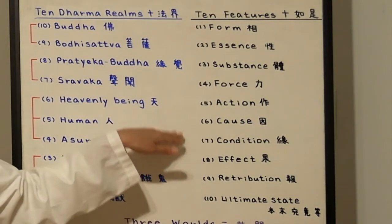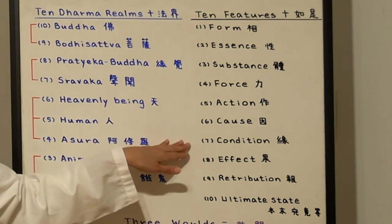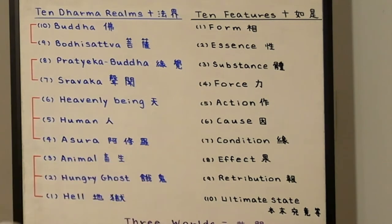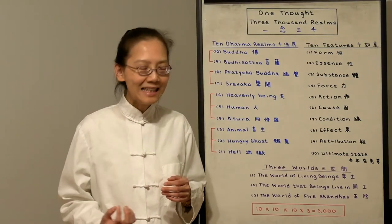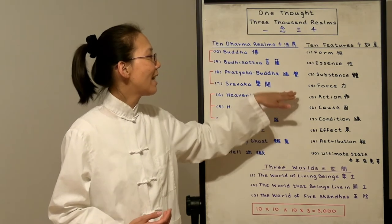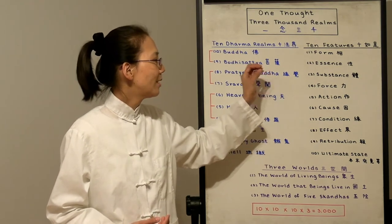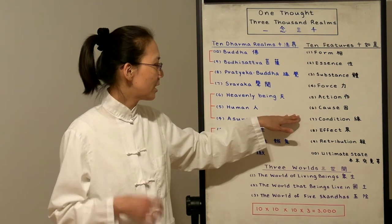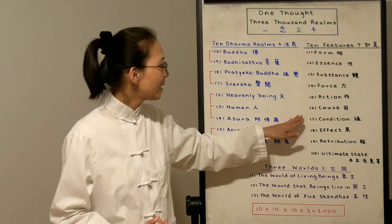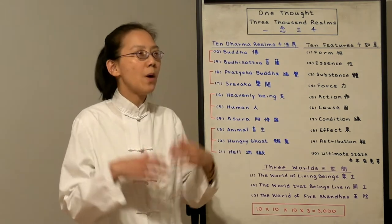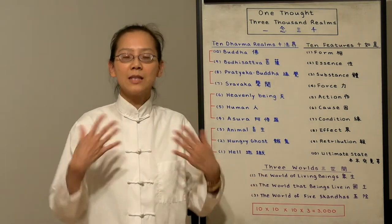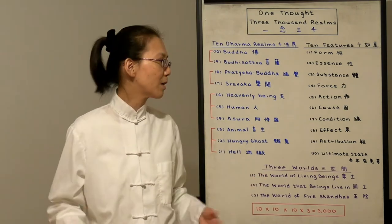Number 7 is their supporting conditions. The hell beings, their conditions are their unwholesome craving and clinging. Their delusions are their supporting conditions and the causes are their actual karmic deeds. The conditions, the delusions, are what support the causes. For Buddha, their conditions are the adornment of their virtues and merits. They have the ability to save all sentient beings because of their merits.